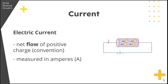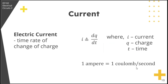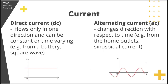Following the IEEE convention, electric current is the flow of positive charge. Mathematically, electric current is the time rate of change of charge — that is, I is defined as dQ/dt, where I is current, Q is charge, and t is time. One ampere is equal to one coulomb per second.